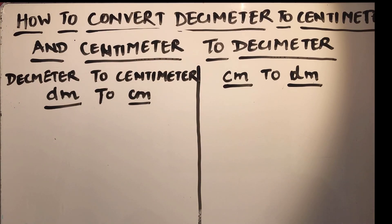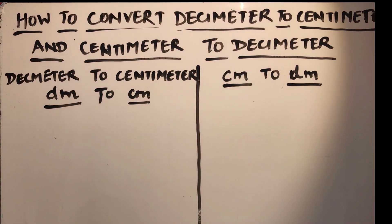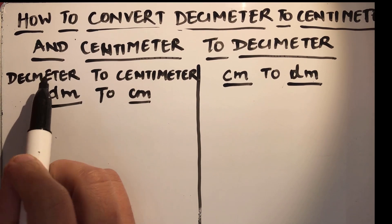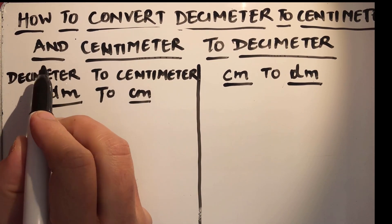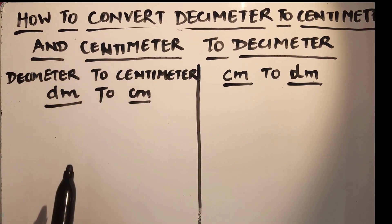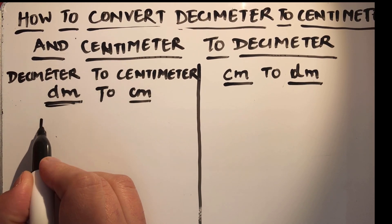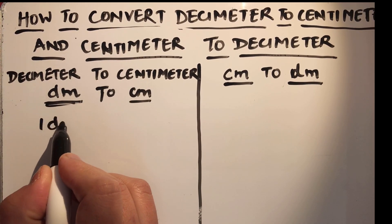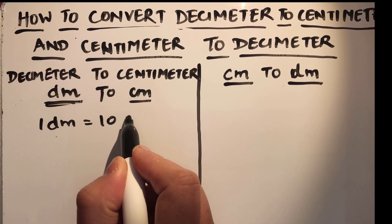Hello viewers, today we are going to learn how to convert decimeter to centimeter and centimeter to decimeter. First of all, we learn how to convert decimeter to centimeter. For this we should know the basic relation between decimeter and centimeter, which is 1 decimeter is equal to 10 centimeters.